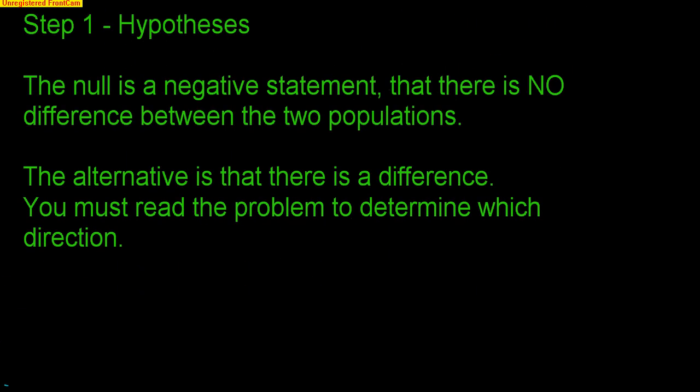We already should know the steps to our hypothesis test. Step one is that you're going to create your hypotheses. The null is always a negative statement — there will be no difference between the two populations. That means the proportion from sample one equals the proportion from sample two.